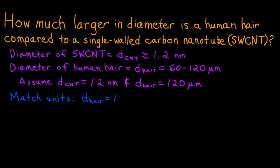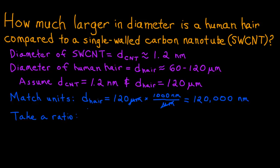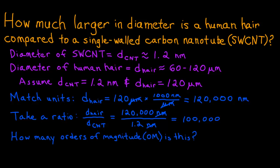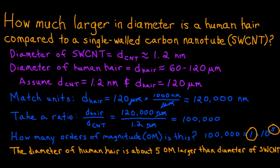So, we take the hair diameter of 120 micrometers, multiply it by 1,000 nanometers per micrometer, cancel units, and end up with the diameter of human hair being 120,000 nanometers. Next, we take a ratio of the two diameters. The diameter of the human hair divided by the diameter of the carbon nanotube is equal to 120,000 nanometers divided by 1.2 nanometers, which, after canceling units, equals 100,000. How many orders of magnitude is this? 100,000 is equal to 1 times 10 to the 5th power. The 5 means that the hair is close to 5 orders of magnitude larger than the nanotube. The 1 means that, by this calculation, the human hair is exactly 5 orders of magnitude larger than the single-walled carbon nanotube. So, this is our answer for part 1. Because our diameters are approximations, it is best to say that the hair's diameter is about 5 orders of magnitude larger than the diameter of the nanotube.